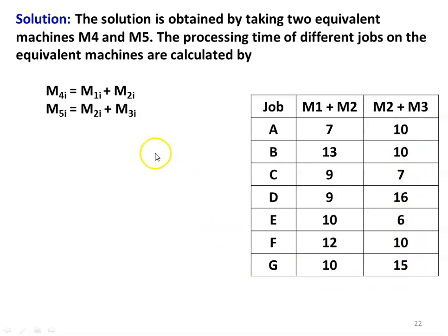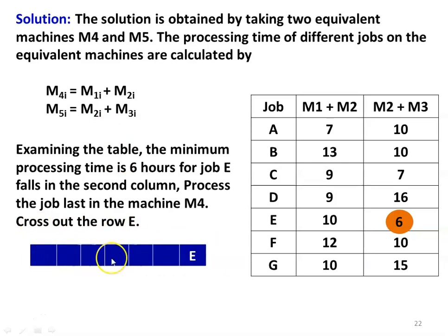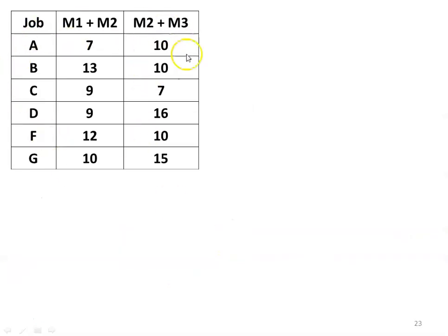We start the solution procedure by examining the table. The minimum processing time is 6 hours for job E, which falls in the second column. Since it falls in the second column, process job E last. Cross out row E. The remaining table has jobs A, B, C, D, F, G. Examine again — the minimum time is 7, which falls for job A on the first column and for job C on the second column. Process job A first; job C is processed prior to E.